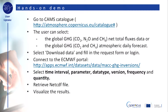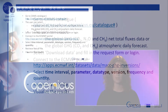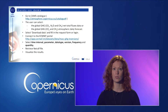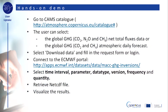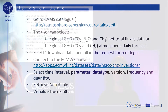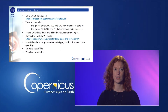Connect to the ECMWF portal. Select the following options: time interval using the slider at the top of the page. Then select the parameter — carbon dioxide, methane or nitrous oxide — followed by the data type. Also select a version of the data that you would like to download.